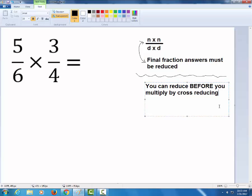And all cross-reducing means is any numerator can reduce with any denominator. So as long as one's on the top and one's on the bottom, you can go ahead and do some reduction.